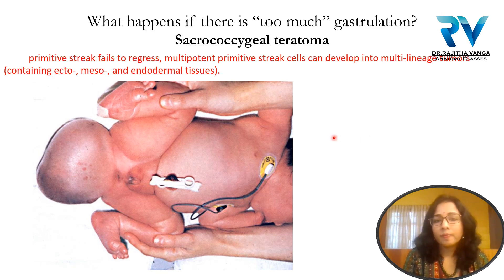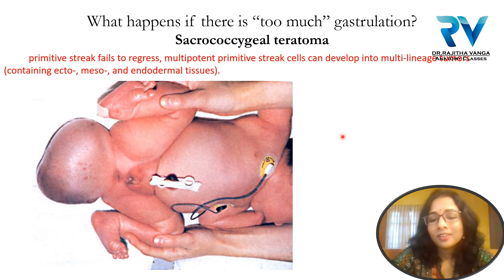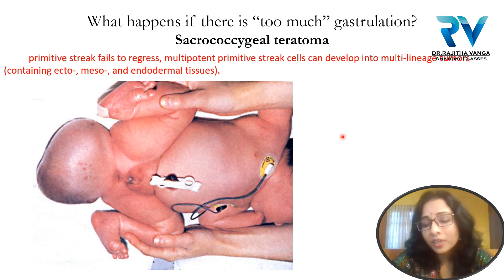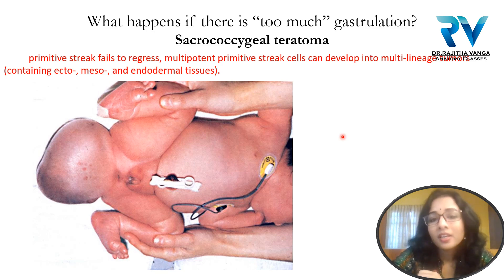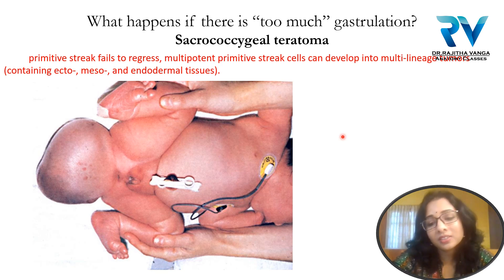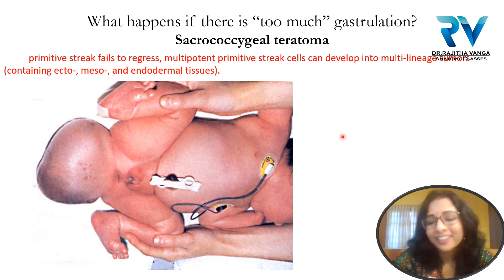This concludes the topic on the primitive streak: when it appears, what its parts are, how it forms, the important changes it causes, what happens if it disappears early causing caudal dysgenesis, and what happens if it persists causing sacrococcygeal teratoma due to excessive gastrulation. Thank you.